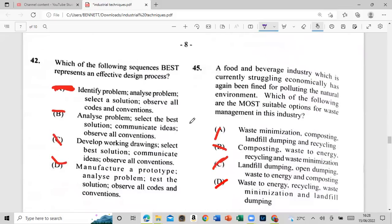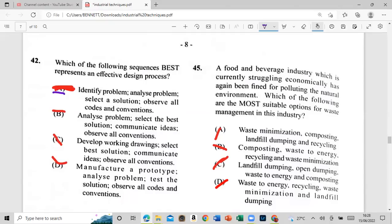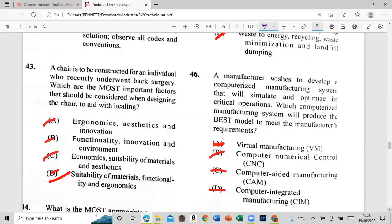We shall have to follow in sequence, best represent an effective design process. A: identify the problem, analyze the problem, select a solution, observe all codes and conventions. So, guys, this is so well that we're not going to go any further. So, part of the two is here. We're going to find so far, guys.